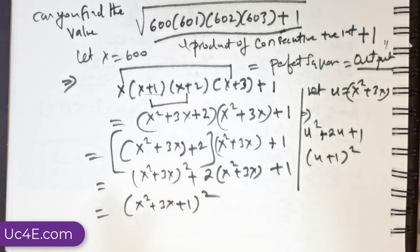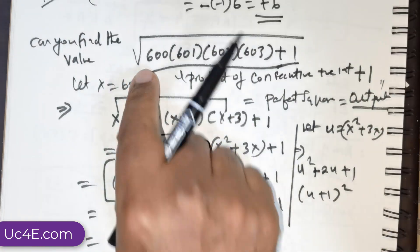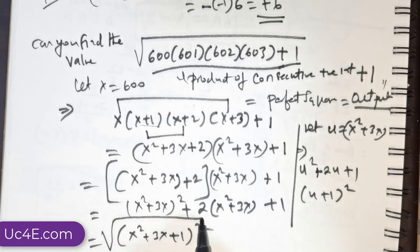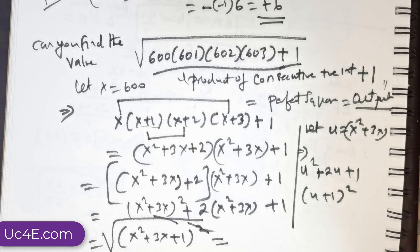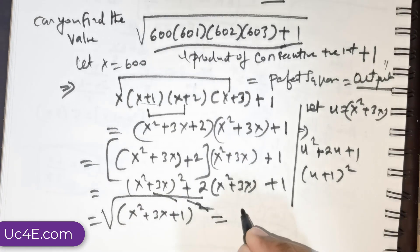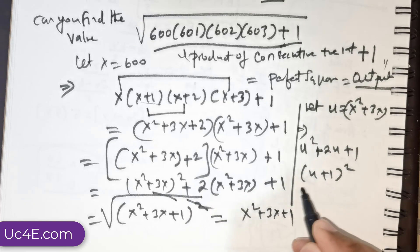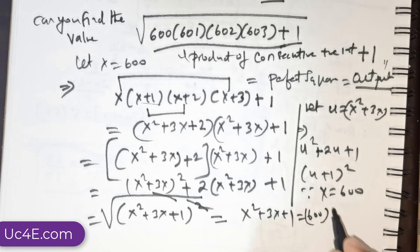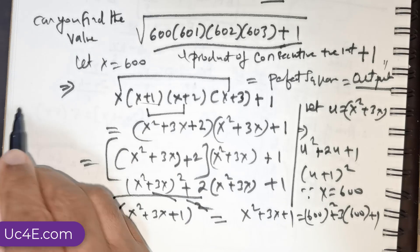Applying the square root function to (x² + 3x + 1)², the radical and the square cancel, giving us x² + 3x + 1. Since x = 600, the answer is 600² + 3(600) + 1.